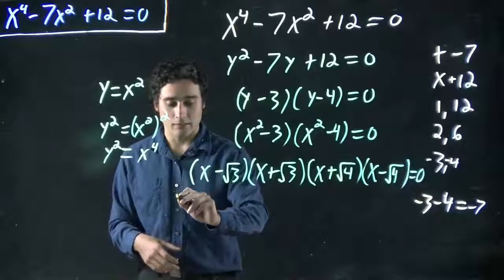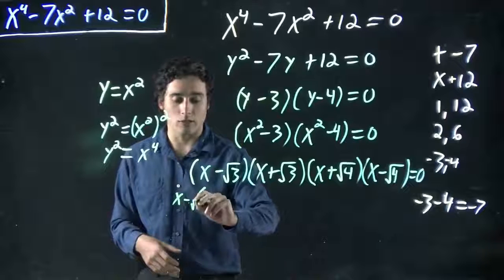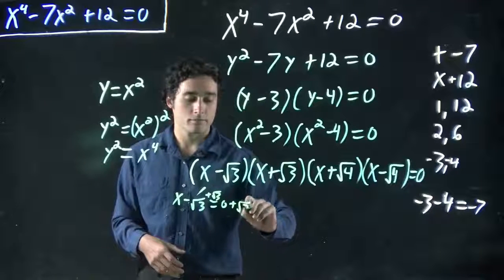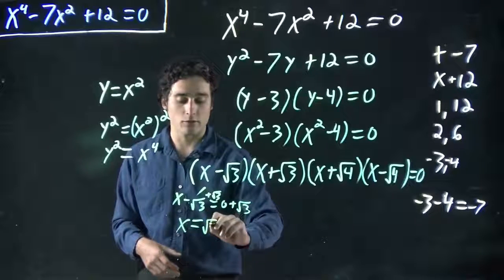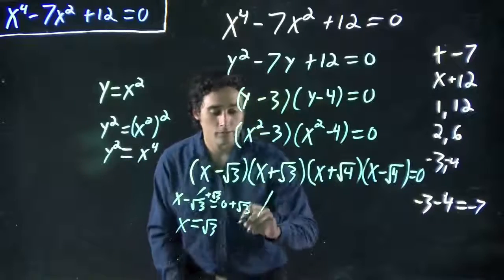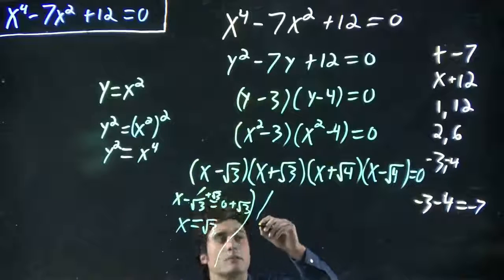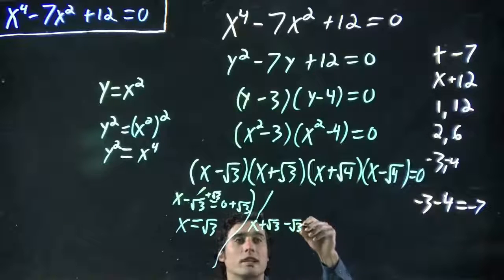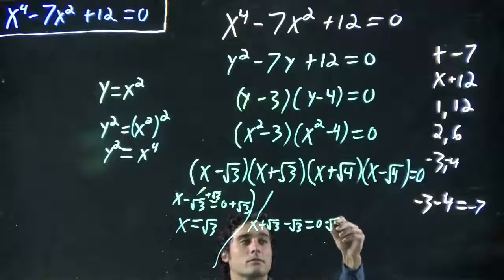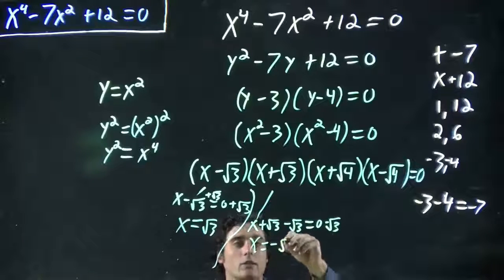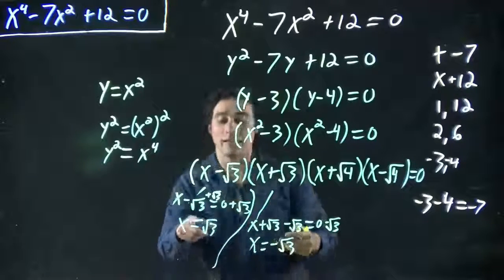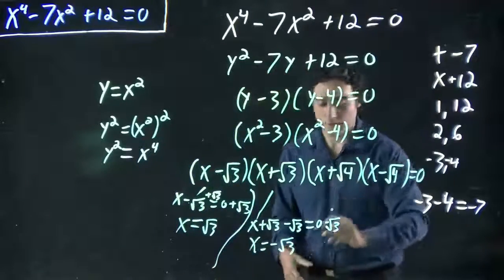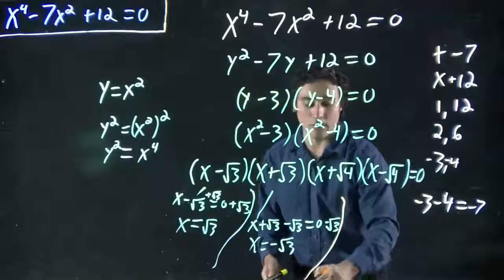So, that means we've got x minus square root of 3 equals 0. Add square root of 3 both sides. And we get x equals square root of 3. This one. And I'll do a little separation. We've got x plus square root of 3. So, we're going to subtract square root of 3 from both sides. And we get x equals minus square root of 3. That same pattern we always got where it's x is plus 1 and minus 1. Almost lost my mic there.